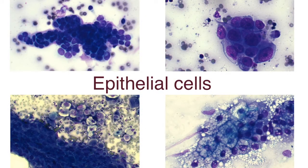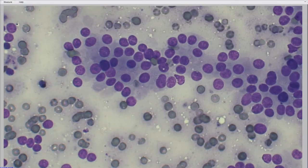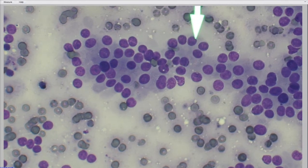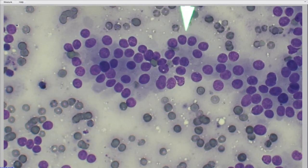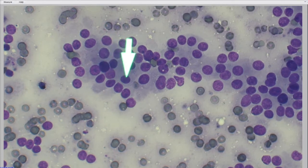One thing right off the bat that you can notice is how different all of these cells look. The reason they look so different is because we have different types of epithelial cells all over our body. Prostate is a type of epithelial cell, liver epithelial cells, skin epithelial cells. And you might notice these little ring-around-the-rosie circular structures of cells.